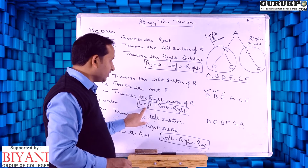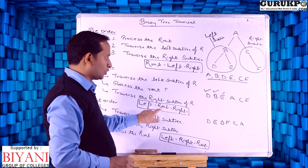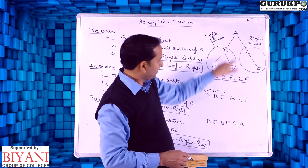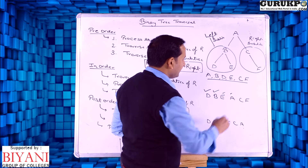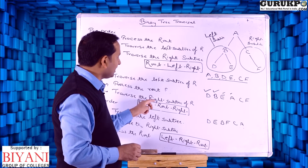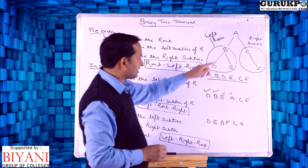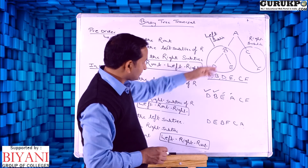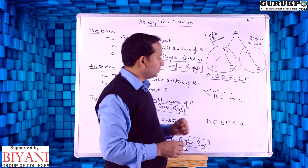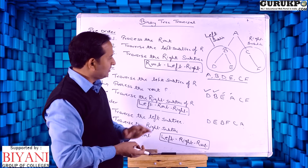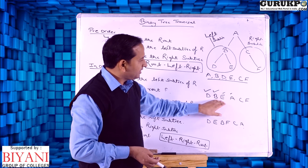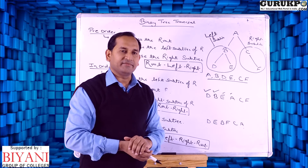After the left subtree, we go to the root node. Here the root node is A, so we traverse A. After that we go to the right subtree, where we traverse C and then F. So ultimately the traversal order is D, B, E, A, C, F.